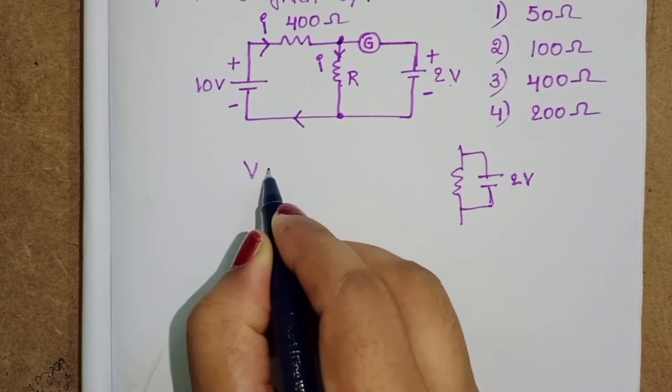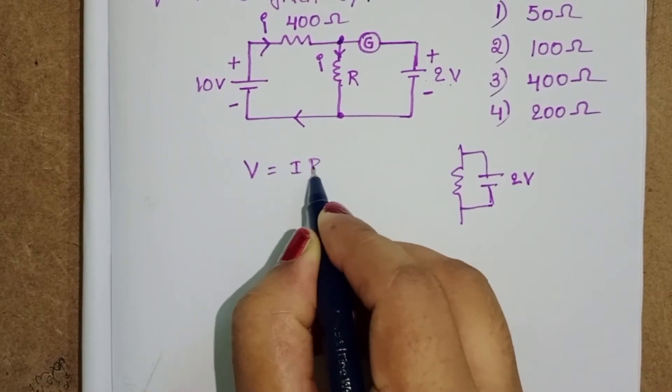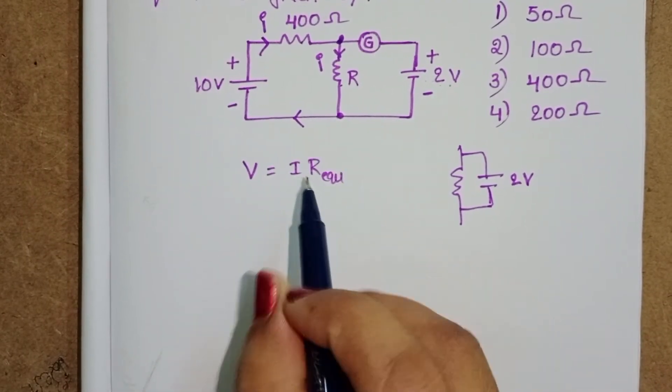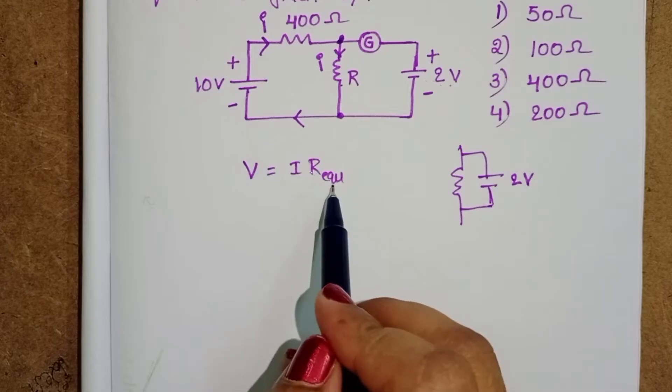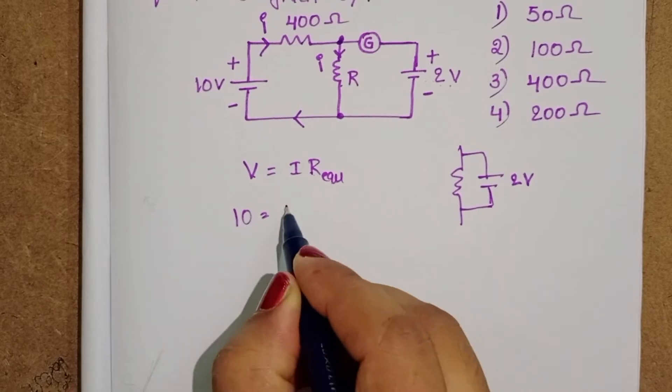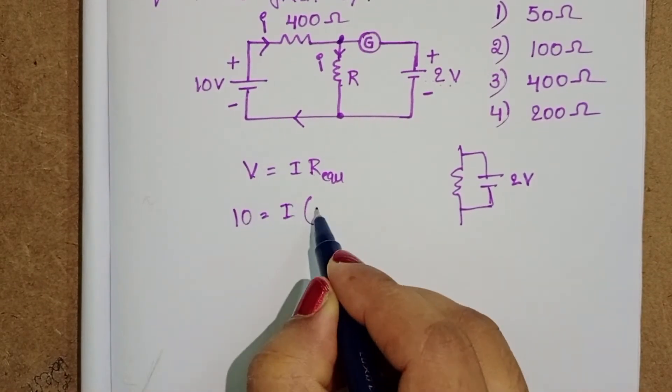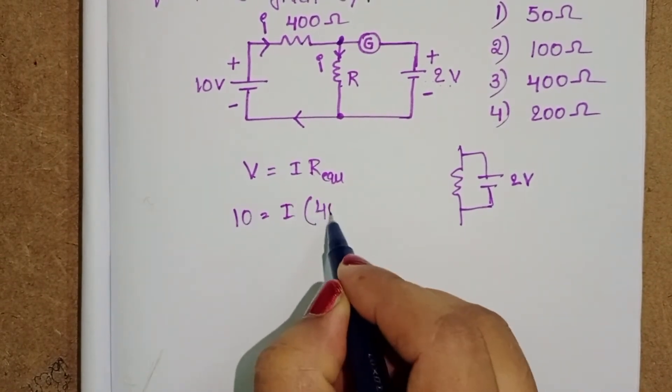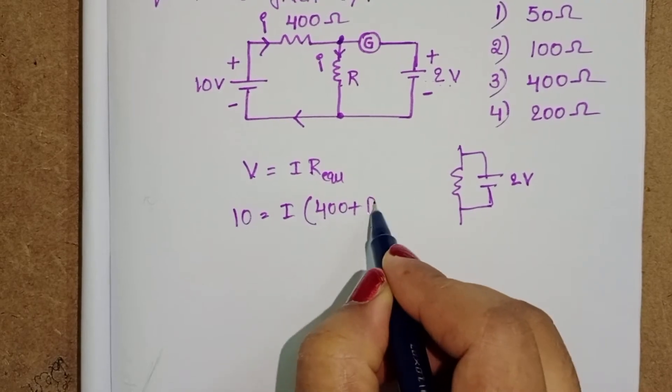We know V equals to IR. In place of R, take R equivalent. Potential difference here, 10 volt. And we don't know the current. Total resistance in the circuit is 400 plus R. Take this is equation 1.